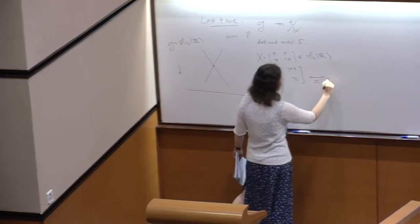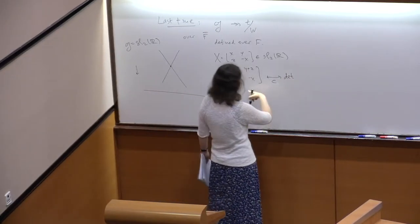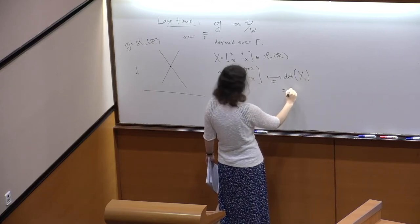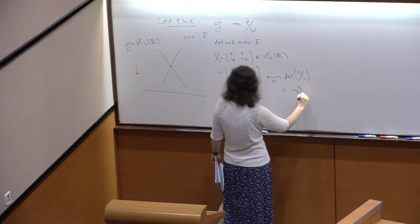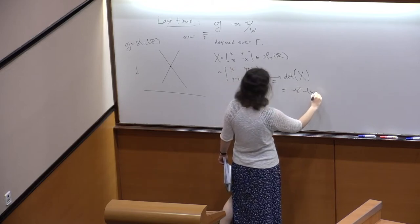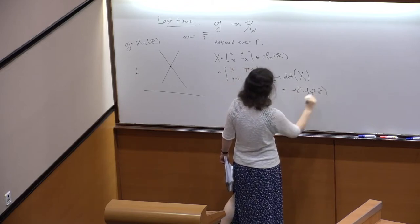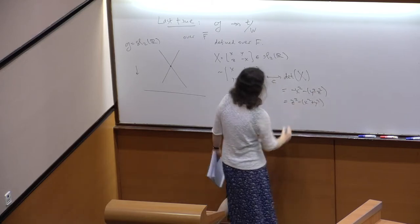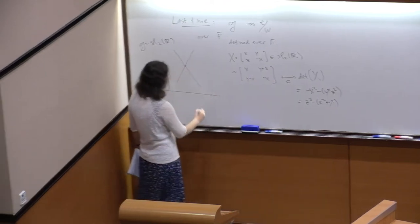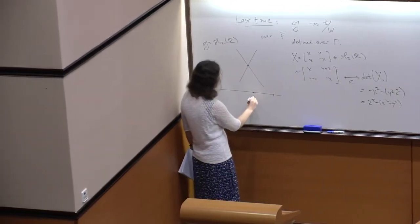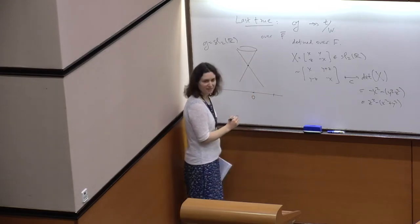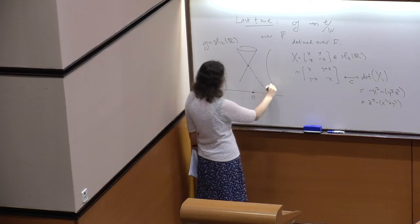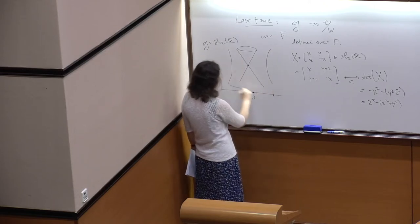The Chevalley map equals negative x squared minus y squared plus z squared, which is z squared minus x squared plus y squared. So the fiber over zero is a cone. Outside the cone you get one-sheeted hyperboloids, and orbits inside the cone look like two-sheeted hyperboloids.